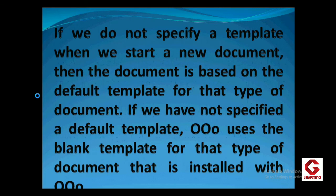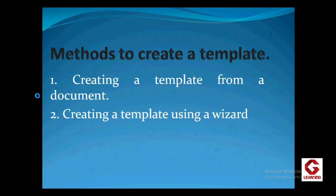After creating a template, we can save it as the default template. Whenever we open a new document, we will automatically get that template on our screen and can start work from the next page. If a template is not set as the default, we will get a blank document instead. There are two methods of creating a template in OpenOffice Writer: first, creating a template from a document, and second, creating a template using a wizard. I am going to show both methods one by one.